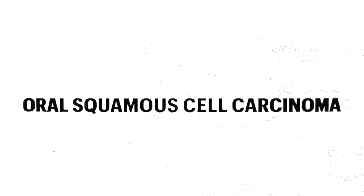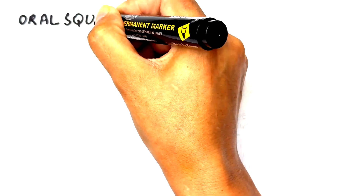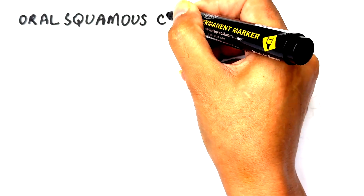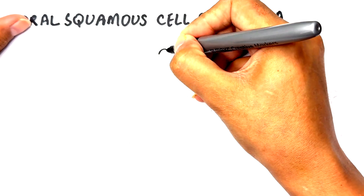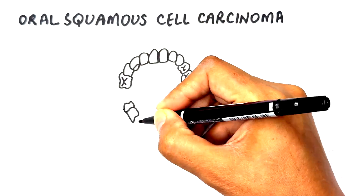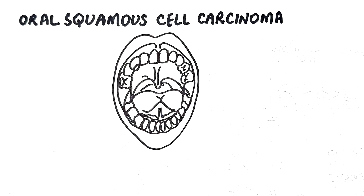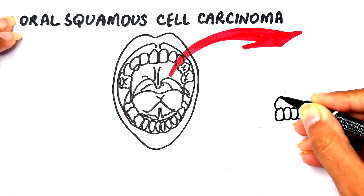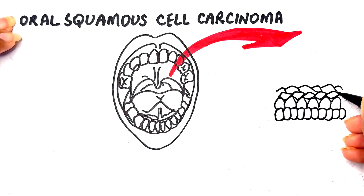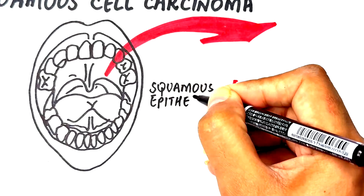Carcinoma refers to a type of cancer that forms in epithelial tissues, which include the tissues that line the surfaces and cavities of the body, and in this case the oral cavity. Oral squamous cell carcinoma specifically arises from the oral squamous epithelium, which upon a close-up view is made up of thin and flat stratified layers of squamous cells. These cells act as a protective barrier covering and shielding the underlying tissues within the oral cavity.